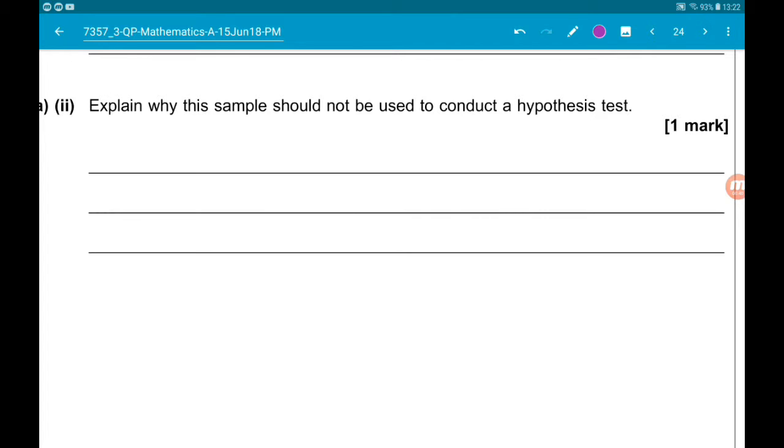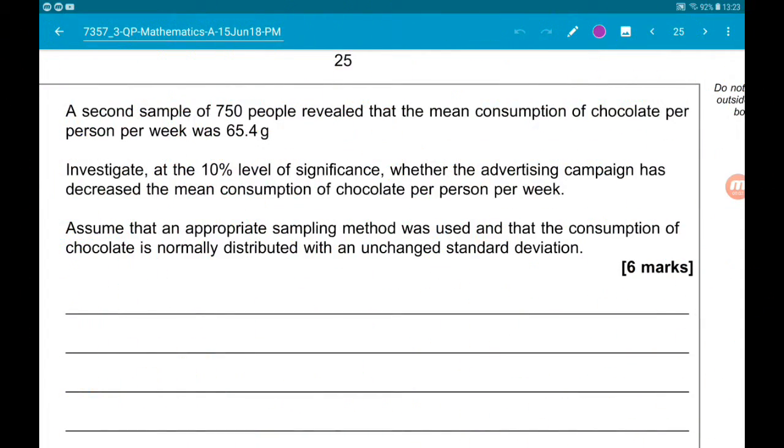In part B, worth six marks, it says a second sample of 750 people was then taken and the mean was found to be 65.4 grams. We want to investigate at the 10% level of significance whether the advertising campaign has decreased or increased the mean consumption of chocolate per person per week. Assume that an appropriate sampling method was used and the consumption of chocolate is normally distributed with an unchanged standard deviation.